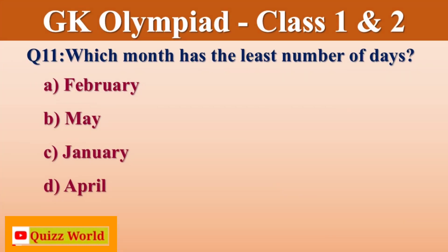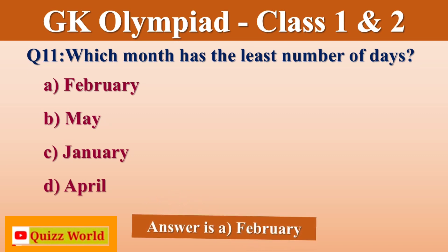Which month has the least number of days? May, January, April, February. Right answer is February.